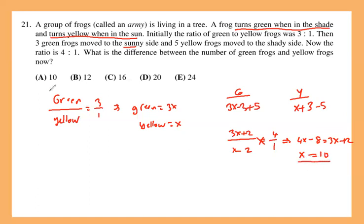So that is 10, but be careful because that's not what they are asking. We need to look for the difference between the number of green frogs and yellow frogs right now, which is these numbers.